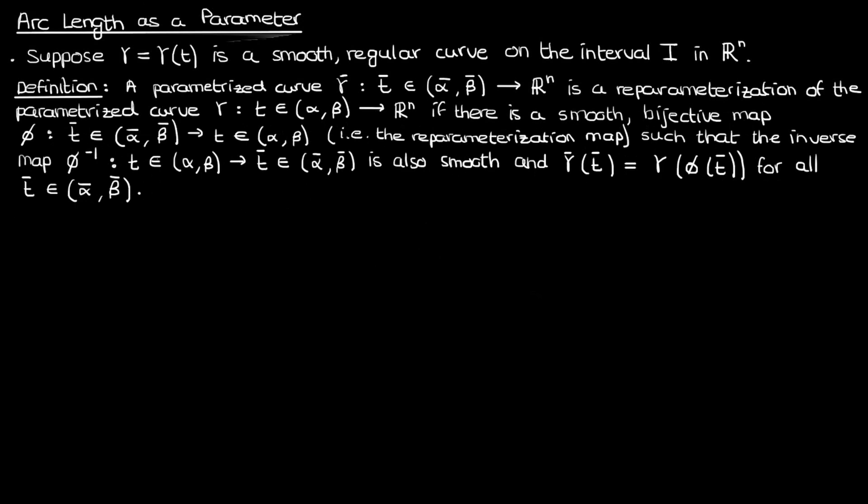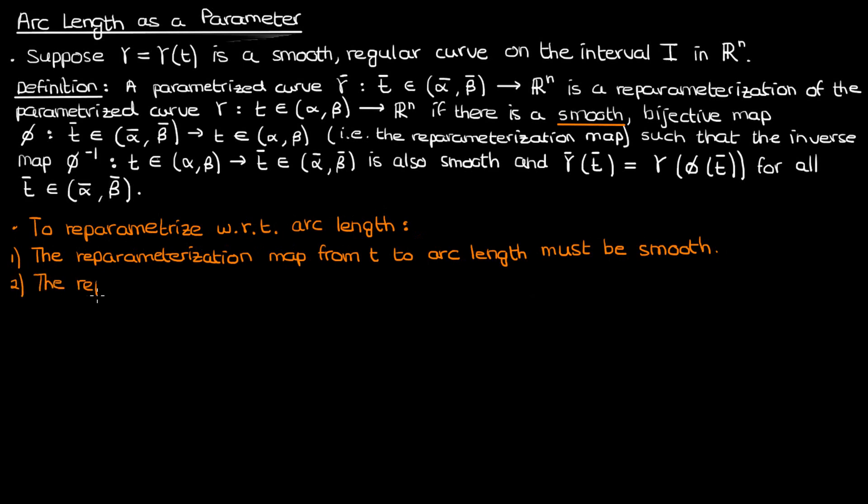The reason we'll be using this definition of reparametrization is that when we ultimately change the parameter from t to arc length, we'll need to check if that change of parameter is actually valid. That is, is the reparametrization map from t to the arc length smooth and is it bijective with a smooth inverse? If the answer to both of these questions is yes, then we will have shown ourselves that reparametrizing with respect to arc length is indeed a valid procedure.